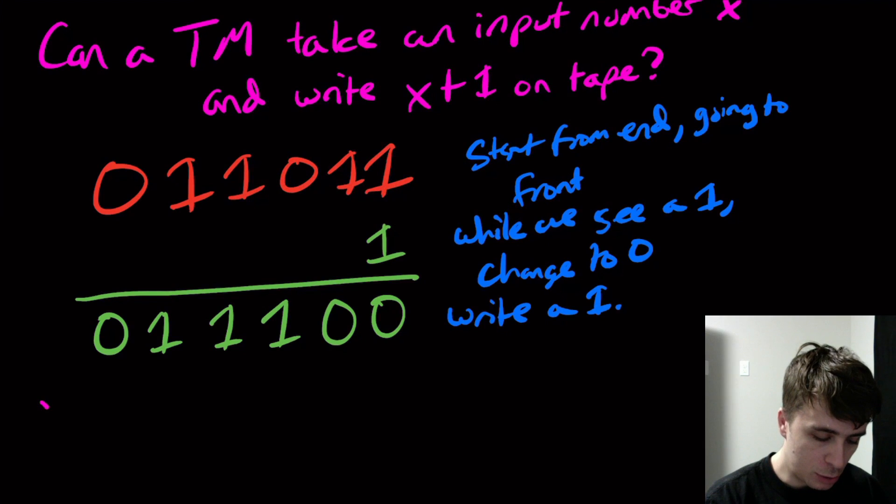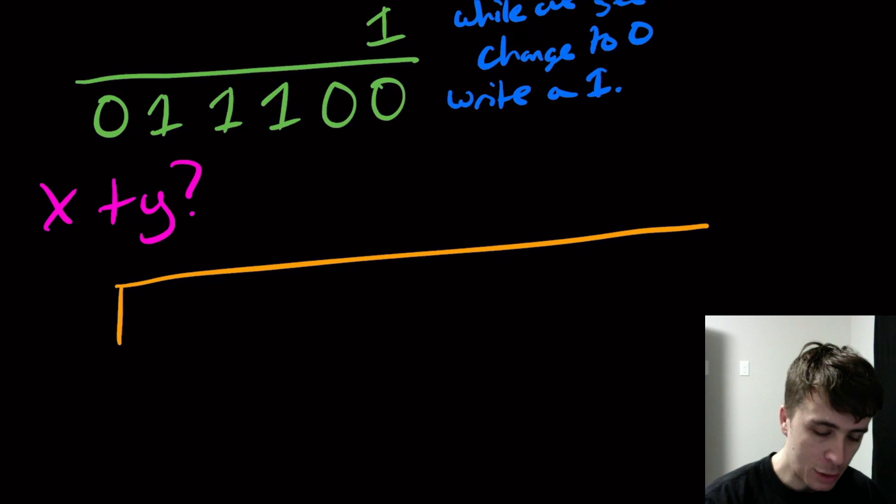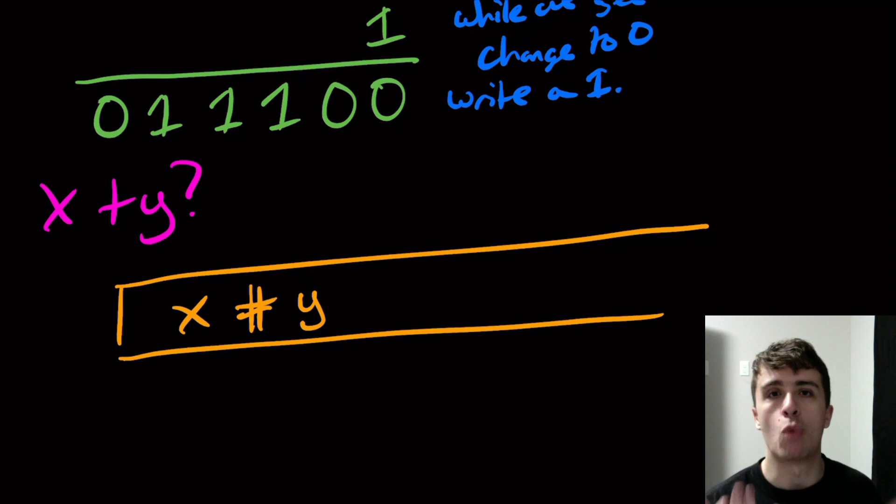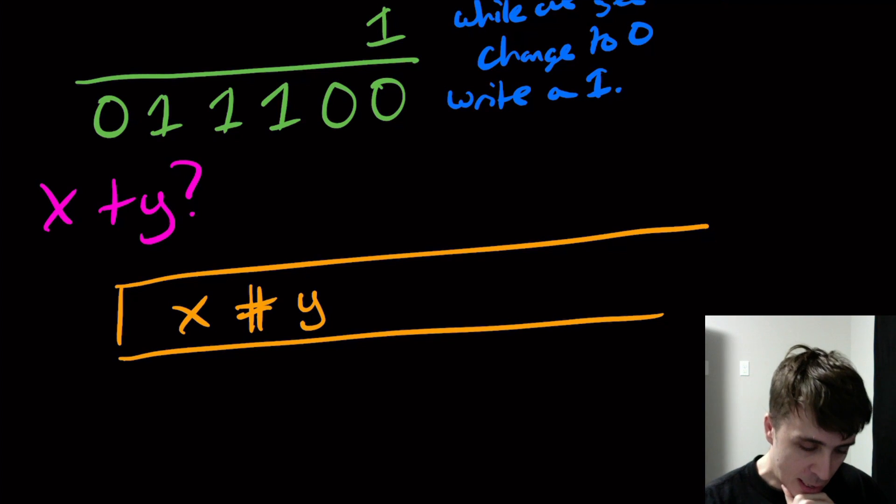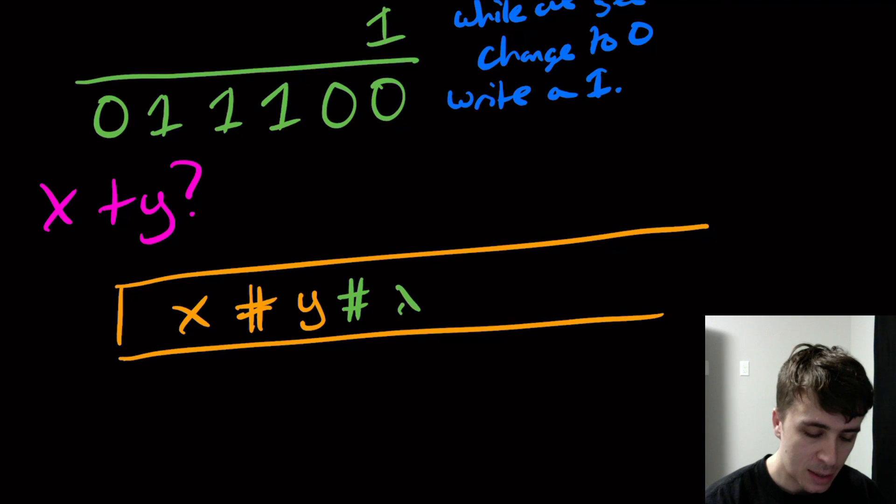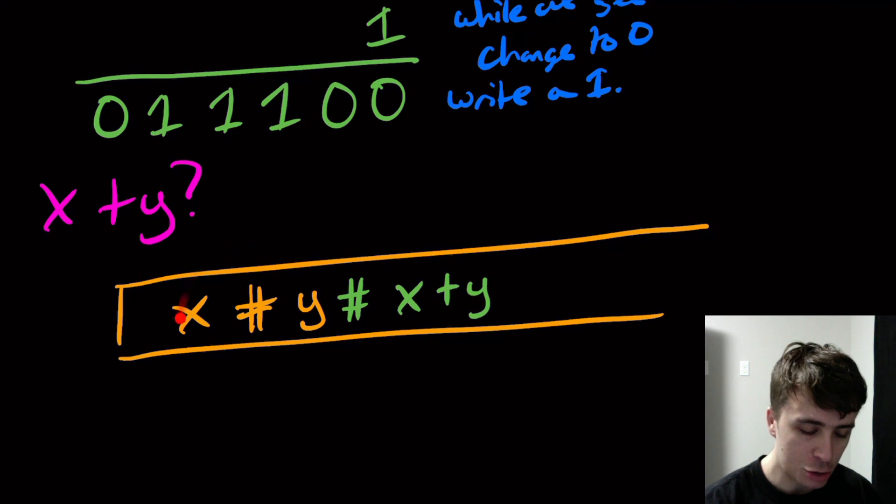What about if I want to do x+y, where x and y are two numbers? On the tape I'm going to give you the number x with a delimiter between them so I know when one number starts and the other begins. I want at the very end there to be x+y. I don't care what's in the other parts, I just care to have x+y written somewhere.